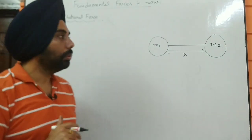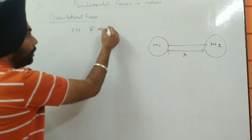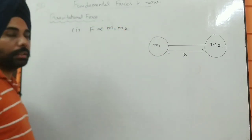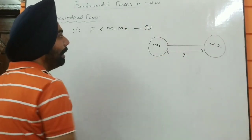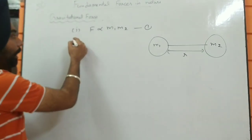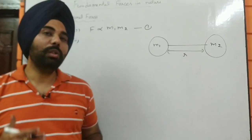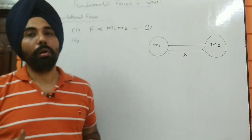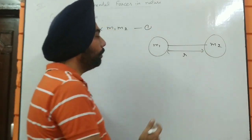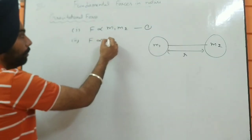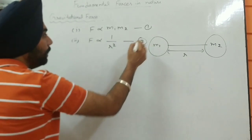The first condition given by Newton is: the force is proportional to the product of masses — F ∝ m1·m2. That is marked as equation number one. The second line from the statement of gravitational force is that the force is inversely proportional to the square of the distance between them — F ∝ 1/r². That is marked as equation number two.